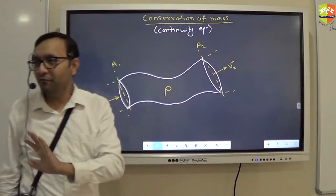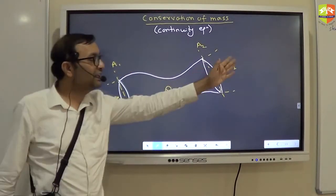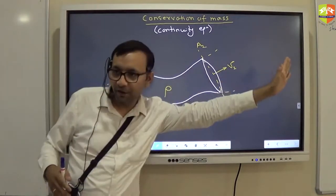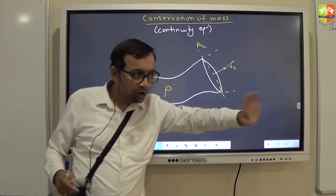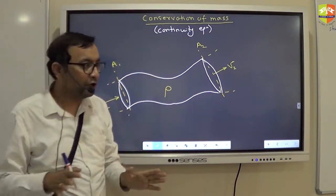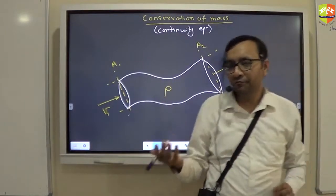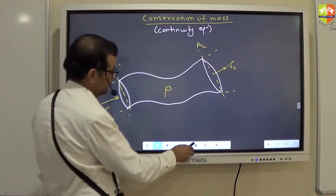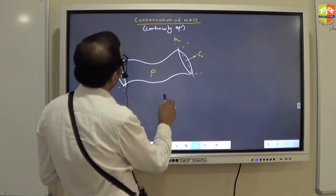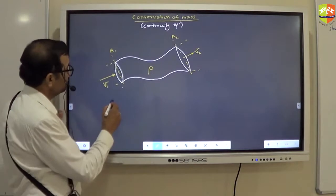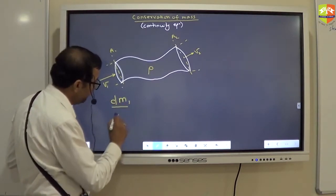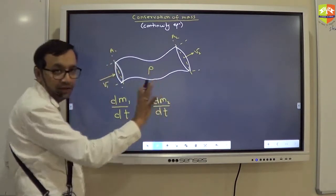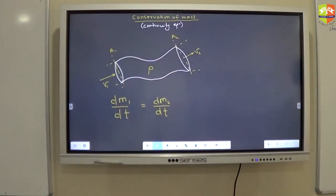But what if the pipe is empty? What if pipe is empty? Pipe doesn't have water initially. Then what will happen? Initially, nothing will come out. First, it will store the water inside the pipe. Once it is full, then whatever comes in from here, it will reject from there. Are you getting it? So, we are not talking about the scenario when the pipe is empty. We are talking about that scenario where pipe is completely filled.